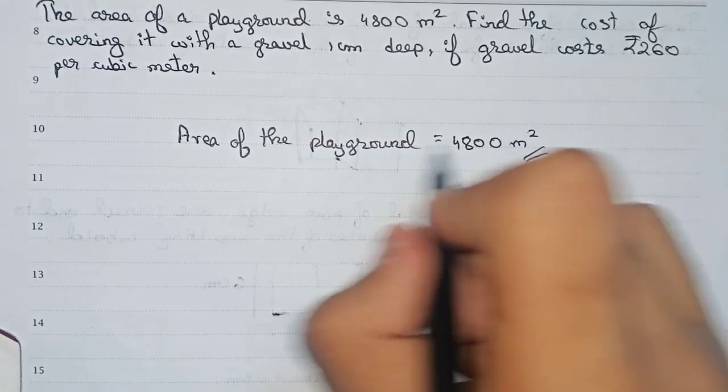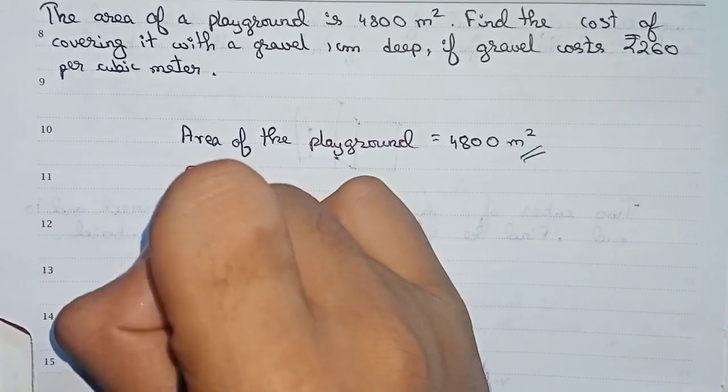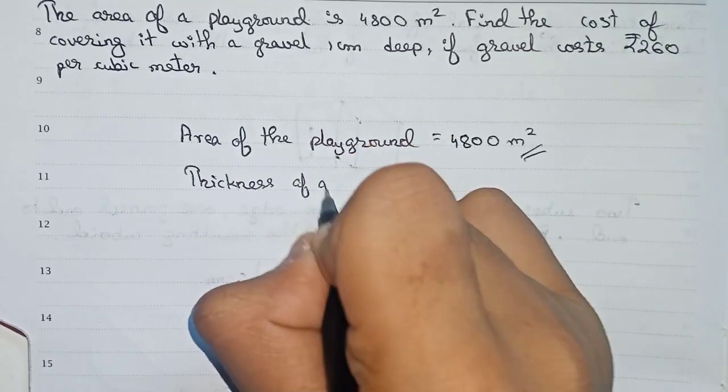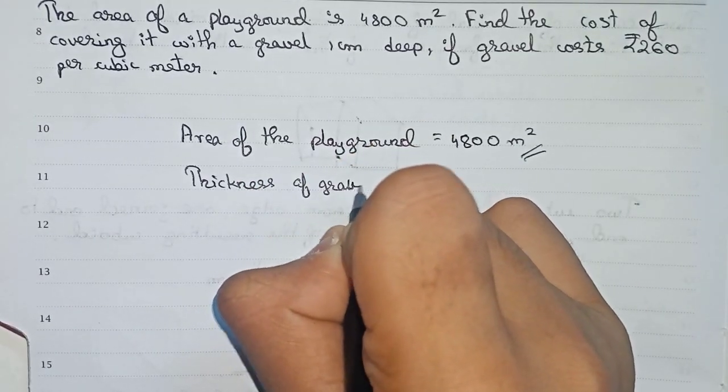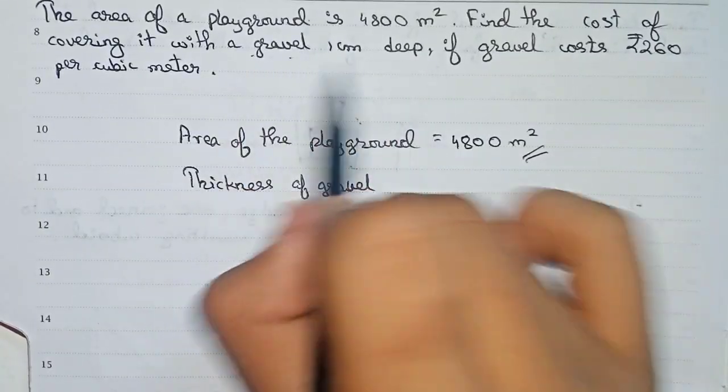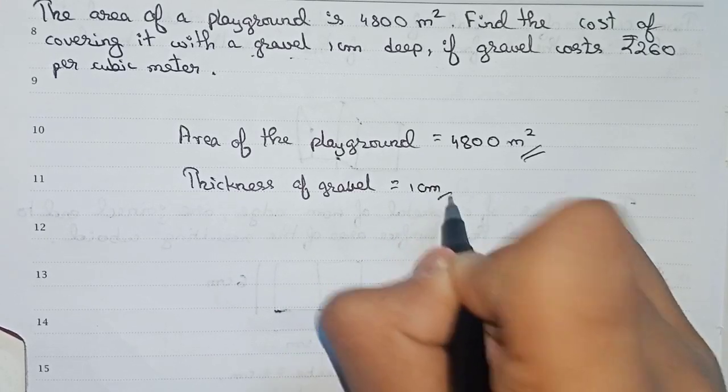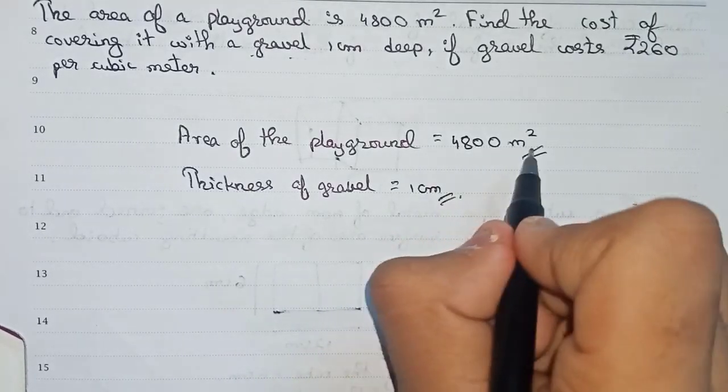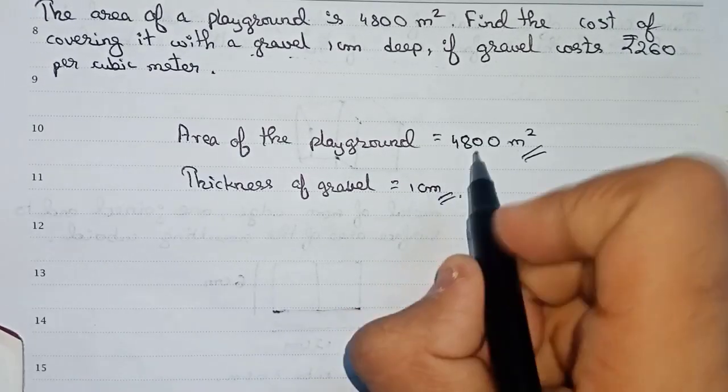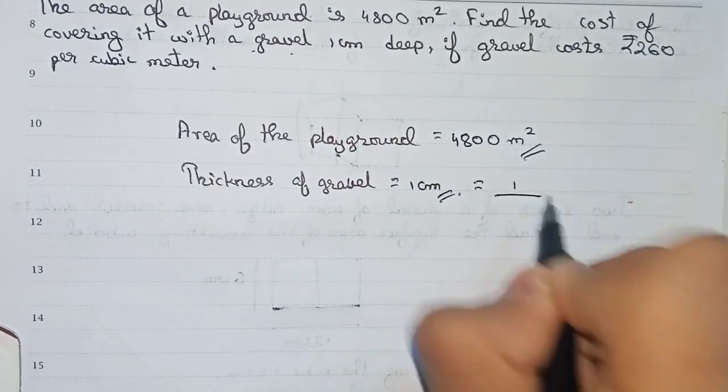Now, thickness of gravel. It is given that gravel is 1 centimeter deep. But there are different units - it is meter and this is centimeter. So we have to convert to meters. To convert to meters we divide by 100, so that means 0.01 meters.